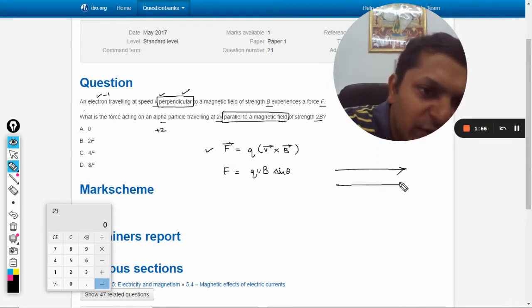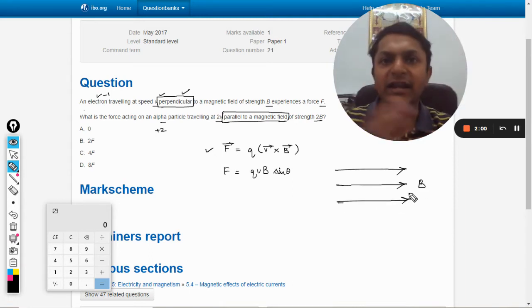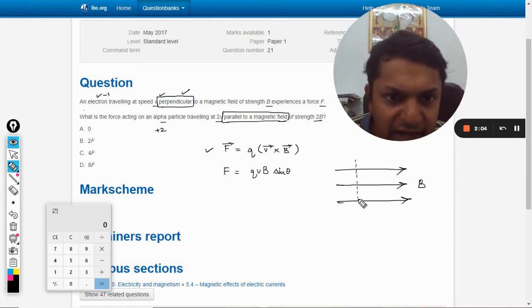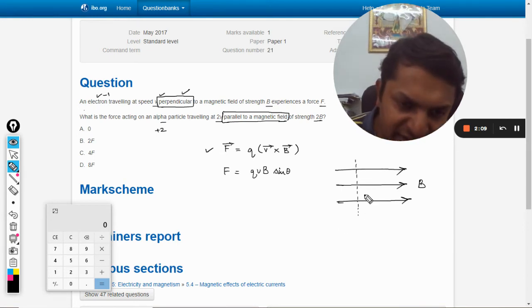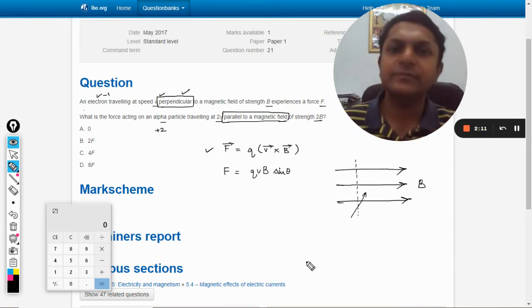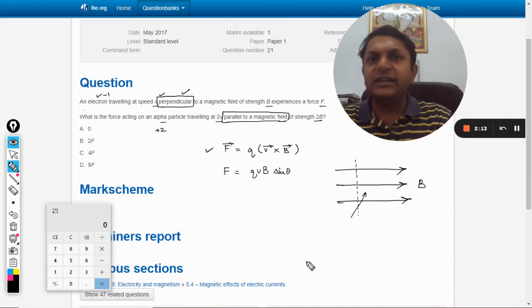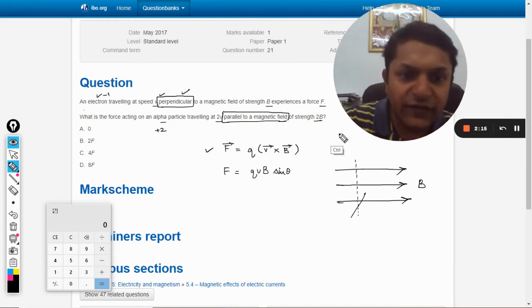Now let us go a little deeper and try to understand what is happening here. This is the magnetic field B, and let us say an electron or a charged particle - alpha or positive or whatever - they are entering this at some angle. Now this angle is not 90 degrees; they are entering like this.